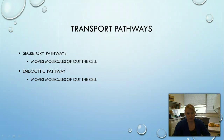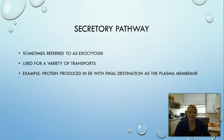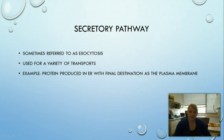Now let's talk about transport pathways. We have the secretory pathway and the endocytic pathway — secretory moves things out, and endocytic brings things in. The secretory pathway is sometimes called exocytosis. One example is moving a protein from the ER to its final destination, the plasma membrane — say we need to make new receptors that need to be sent to the plasma membrane. Let's use this as our example and follow through the process of the secretory pathway.